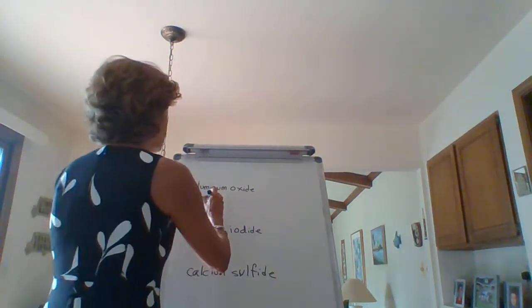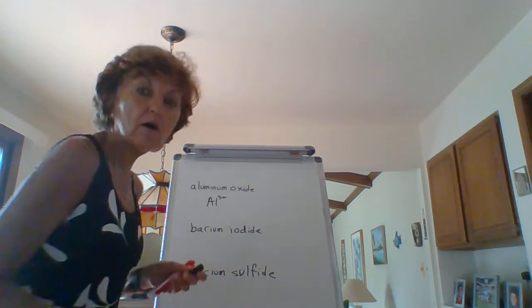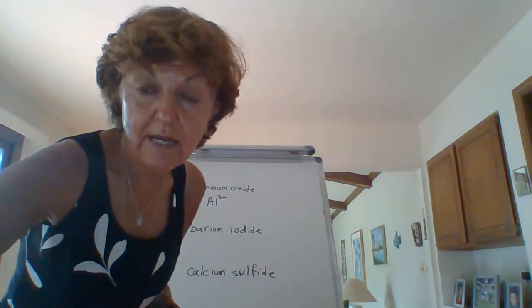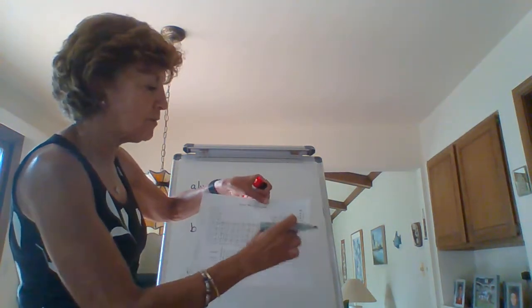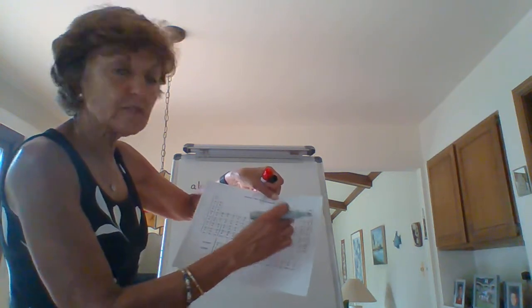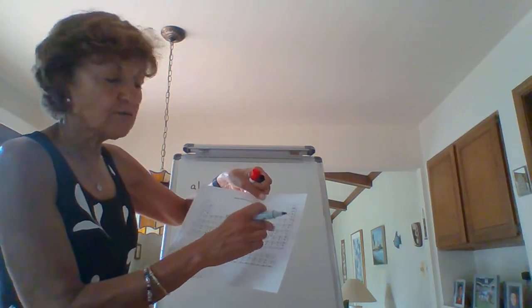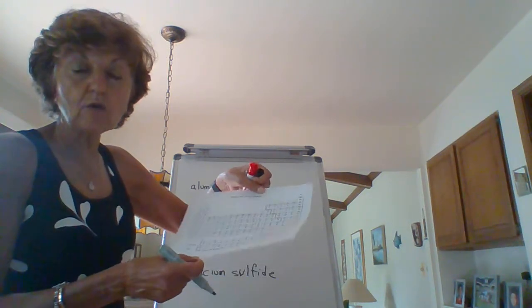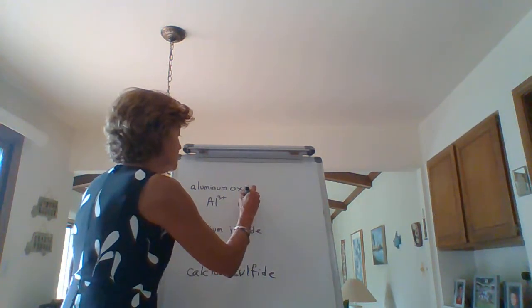So we're going to write down Al3+. Okay, oxide. What is oxide? Oxide, remember those are the non-metals. So you go over to your periodic table. We said the halogens are minus 1. Oxygen, sulfur, and selenium are minus 2. Nitrogen, phosphorus, and arsenic are minus 3. So oxides are minus 2. So we write O2-.